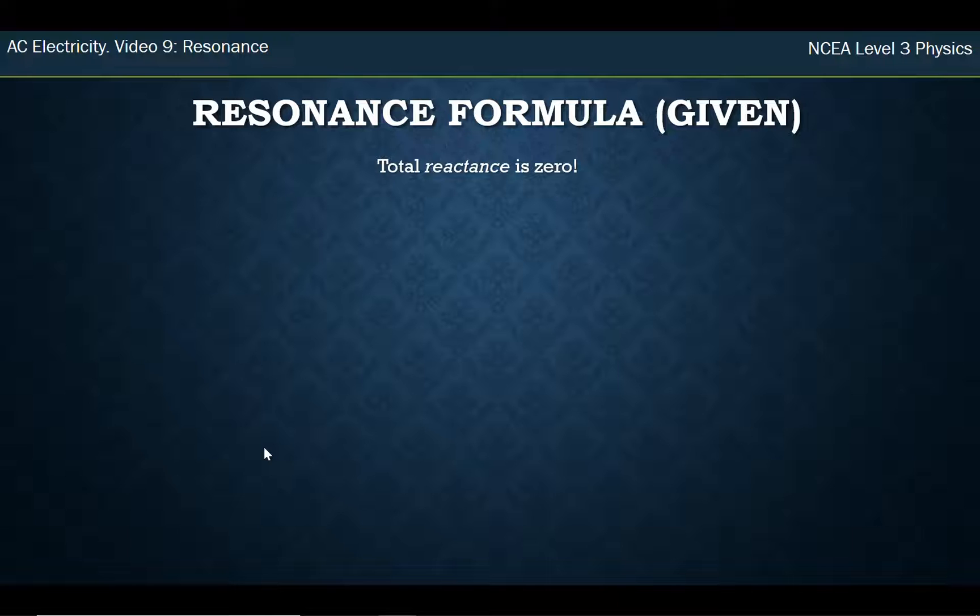So we know that at resonant frequency, the total reactance is zero. The reactance of the capacitor and inductance cancel each other out. So I could write that mathematically like this. I've got a formula for each of those reactances. One is ω times L, and the other one is 1 over ω times C. And what I want to do is put the omegas on the same side and the L and the C on the same side. So I times ω both sides, and I get an ω squared. And divide by L both sides, I get 1 over LC.